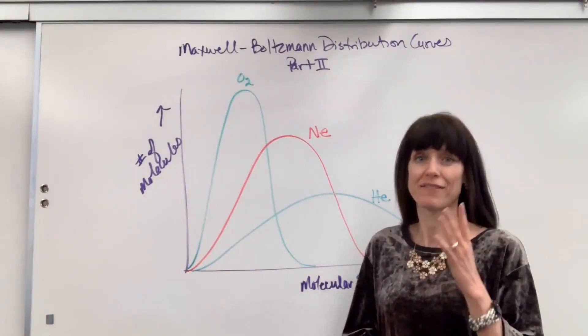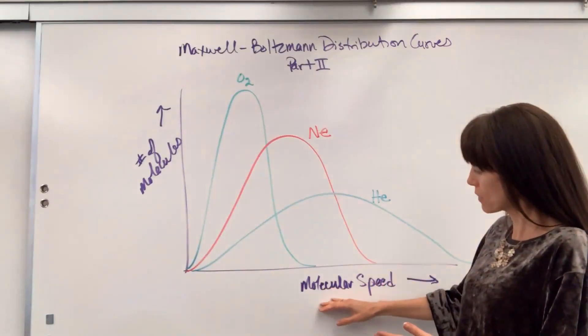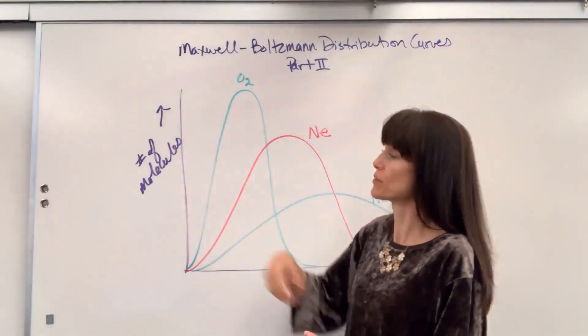Hi, this is the second part of the Maxwell-Boltzmann distribution curve. In this one I am showing molecular speed versus number of molecules.